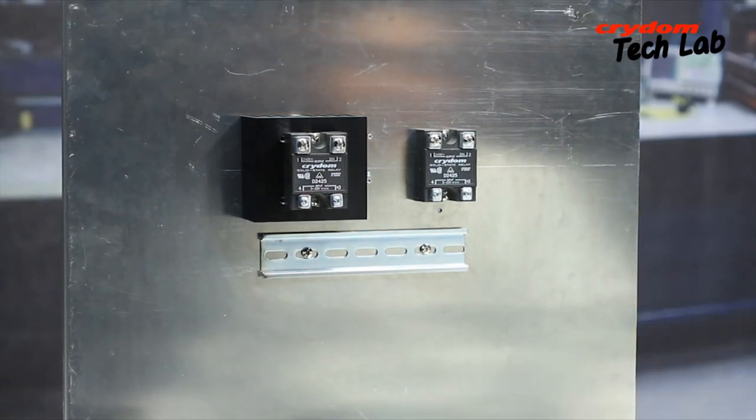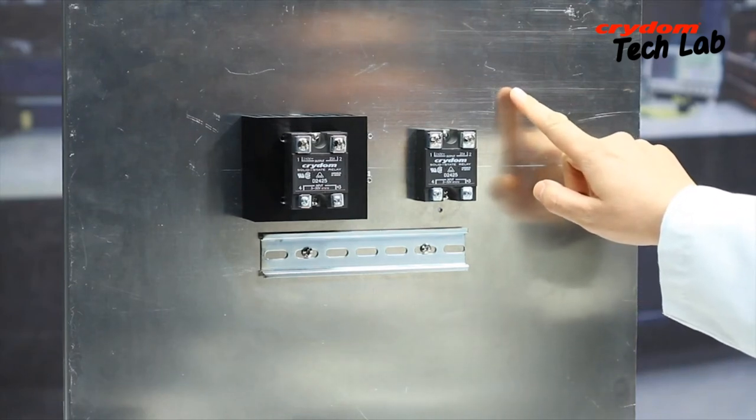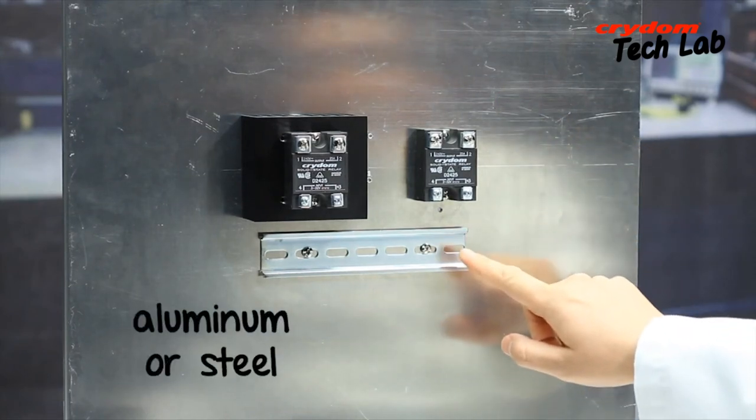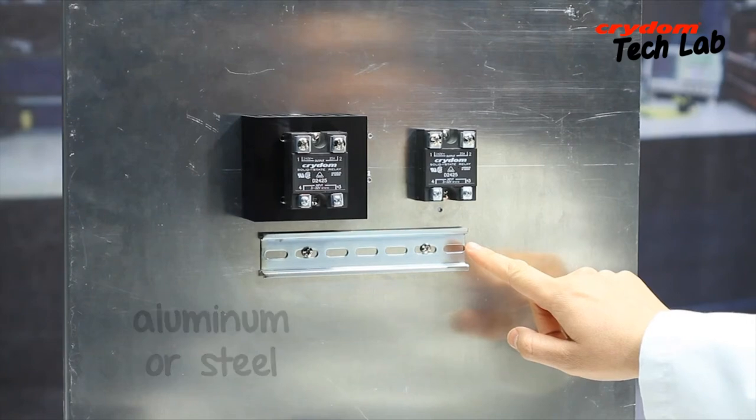The panel or heat sink should be made out of a thermally conductive material, such as aluminum, although steel panels may also be acceptable under certain circumstances.